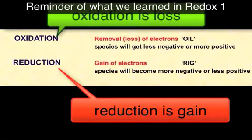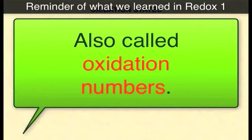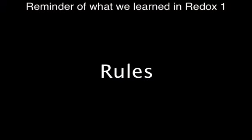Oxidation is the loss of electrons. Reduction is where a species gains electrons. The oxidation state tells us how many electrons you have to either take away or add to something to make it become neutral.